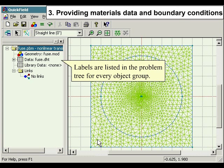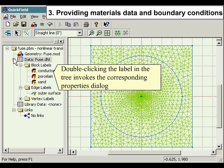Labels are listed in the problem tree for every object group. Double-clicking the label in the tree invokes the corresponding properties dialog.